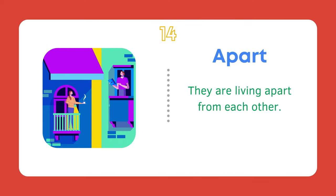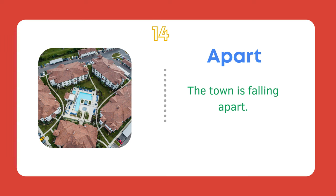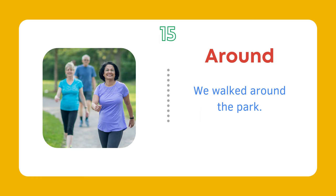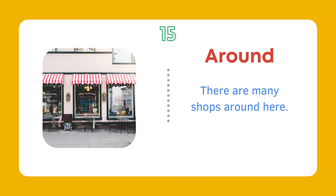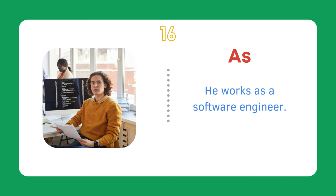Apart. They are living apart from each other. The town is falling apart. Around. We walked around the park. There are many shops around here. As. As a child, she loved to sing. He works as a software engineer.